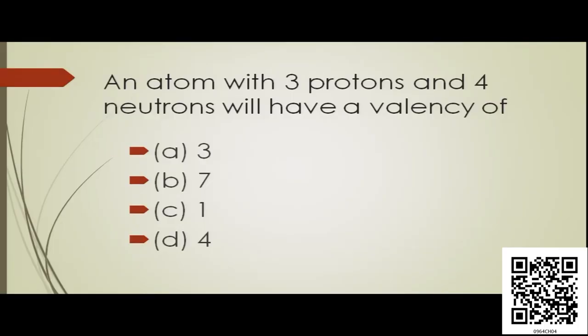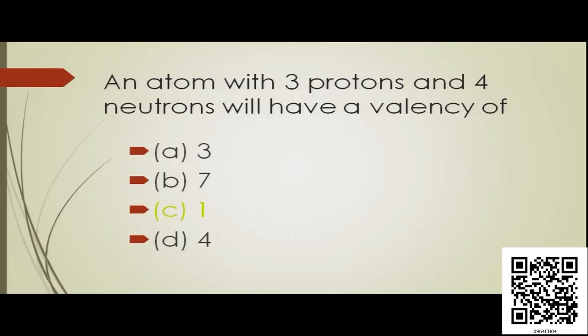So that we can assess ourselves how far we have understood the topic. Here is one question: an atom with 3 protons and 4 neutrons will have a valency of what? Options are 3, 7, 1, 4. If you see that atom contains 3 protons, that means it will have 3 electrons also. The 3 electrons will be distributed as: K shell 2, L shell 1. So the outermost shell will contain 1 electron. As the outermost shell contains 1 electron, the valency will also be 1. So the answer to this question is: the valency of that atom is 1.